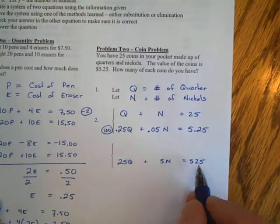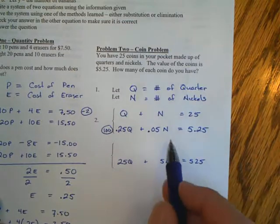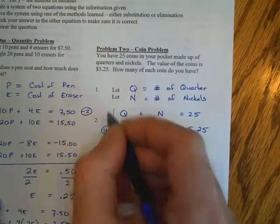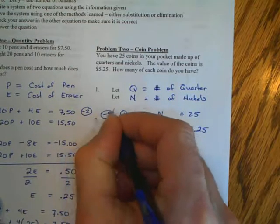Now I'd like to try to drop out my decimal. So I'm going to take the second equation and multiply it by 100. That gives me 25Q, 5N, and 525. No more decimals in the bottom equation.